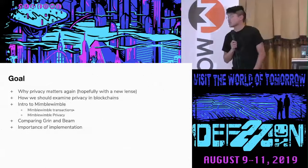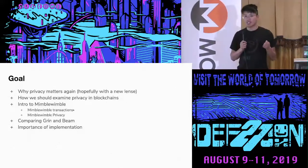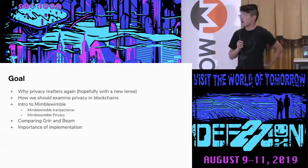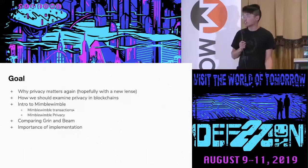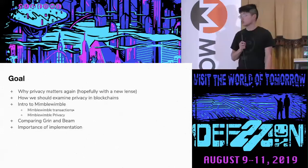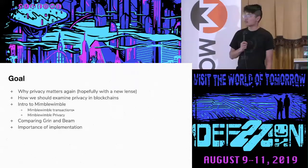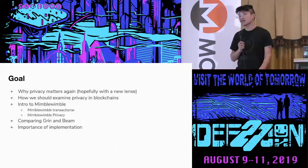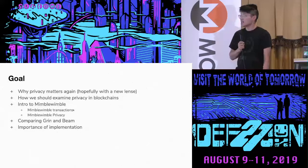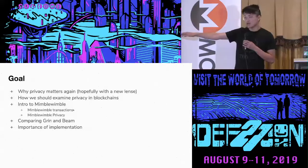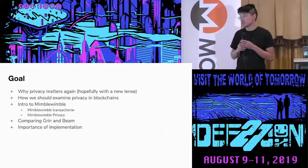The goal here is to describe why privacy matters, how we should examine and explore privacy in blockchains. We'll do a high-level intro to MimbleWimble, talk about how the transactions work, the privacy guarantees it provides and doesn't provide. Then we'll compare Grin and Beam - two separate implementations of MimbleWimble that roughly came alive in January 2018. We'll talk about the importance of implementation, because even though they're both the same protocol at its core, they have different privacy guarantees due to their implementation.